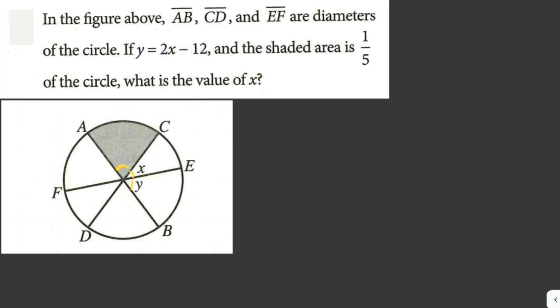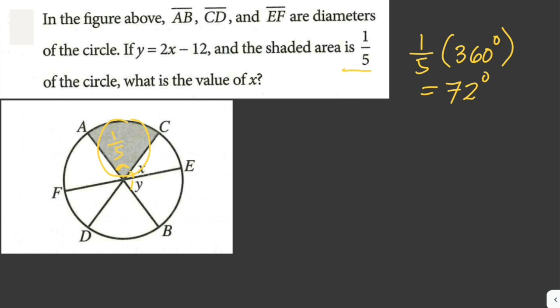It says here that the shaded area is just one-fifth of the circle, and the whole circle measures 360 degrees. Therefore the shaded region is just one-fifth of 360 degrees, and that is just equal to 72 degrees. Therefore the measure of the shaded angle is just equal to 72 degrees.